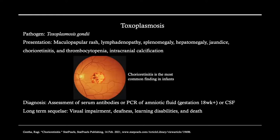The T of TORCH is toxoplasmosis. This is a parasite that may present as a maculopapular rash. You may also have splenomegaly or hepatomegaly, as well as chorioretinitis — the most common finding amongst infants — which is an inflammation of the posterior of the eye. Intracranial calcification is a presentation typically only present in toxoplasmosis as well as cytomegalovirus, and helps to narrow down the disease state. Diagnosis involves assessment of serum antibodies or PCR of amniotic fluid or cerebrospinal fluid.